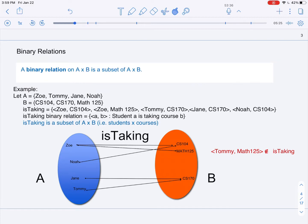They are indeed a subset that those ordered pairs are such that the first element is from A, the set of students, and the second is from the set of classes.